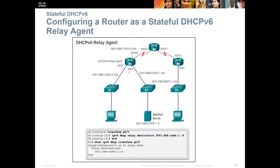To configure a router as a stateful DHCPv6 relay agent — just like we used 'ip helper-address' for IPv4 — for IPv6 we use 'ipv6 dhcp relay destination' followed by the IP address, instead of 'ip helper-address.'